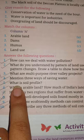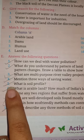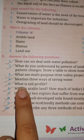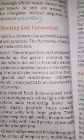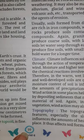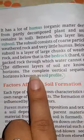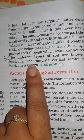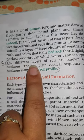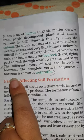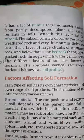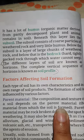Now see question number 5: What is soil profile? Your answer is given on page number 10. The different layers of soil are known as horizons. The complete vertical sequence of horizons is known as soil profile. This was your answer number 5.